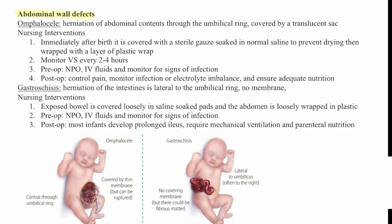Then we have abdominal wall defects. The first type is omphalocele, which is a herniation of abdominal contents through the umbilical ring covered by a translucent sac. Immediately after birth it is covered with sterile gauze soaked in normal saline to prevent drying, then wrapped with plastic wrap. Vital signs are monitored every two to four hours. Pre-op: NPO, IV fluids, and monitor for signs of infection. Post-op: control pain, monitor for infection or electrolyte imbalance, and ensure adequate nutrition.